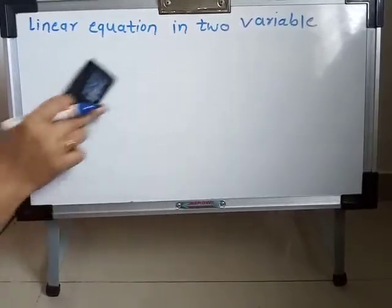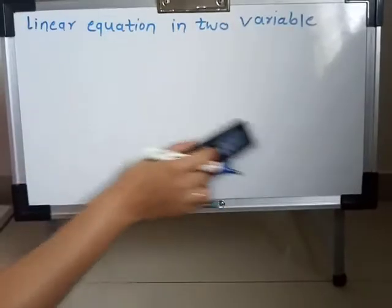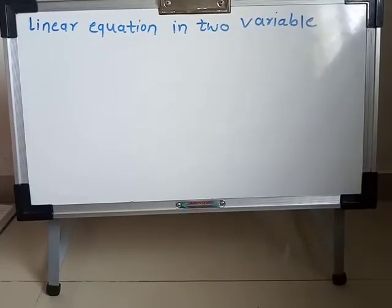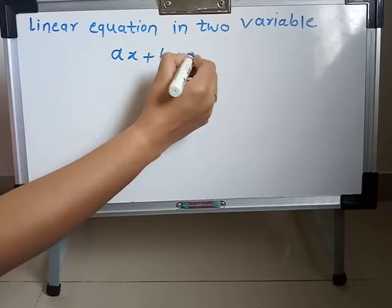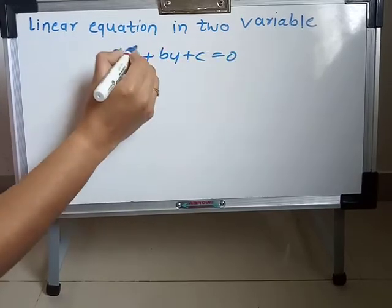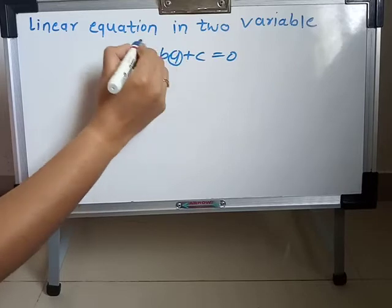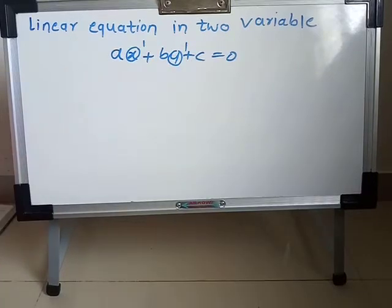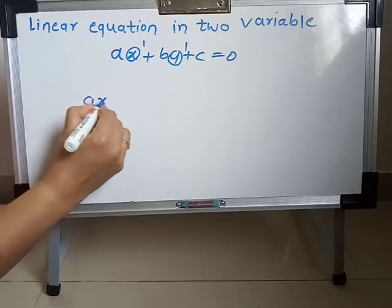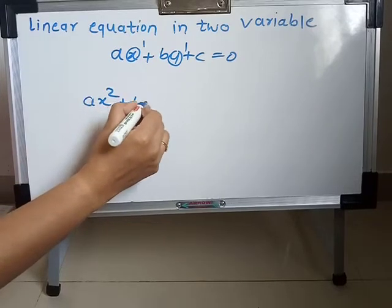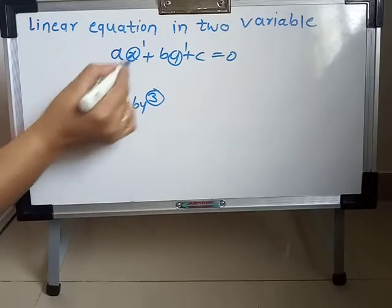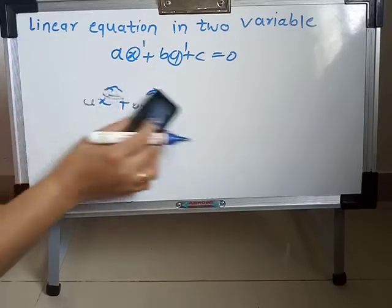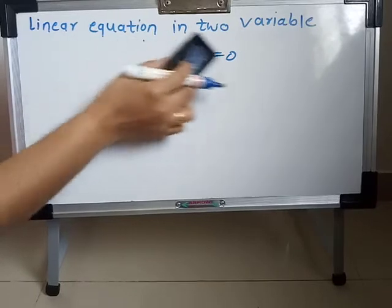What is meant by linear equation, and what is standard form? In the linear equation AX plus BY plus C is equal to 0, the power of X and Y is always 1. It's not degree 2 or degree 3 — we cannot write AX squared plus BY cubed. Only power 1 is present. This is called a linear equation in two variables.